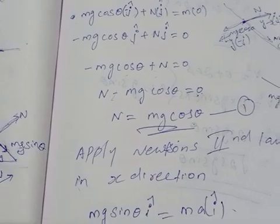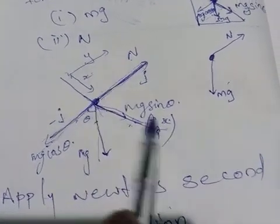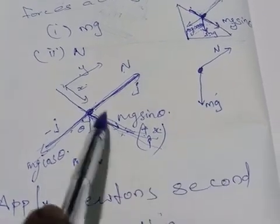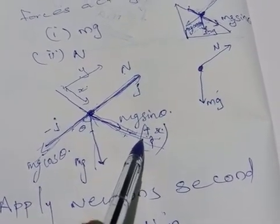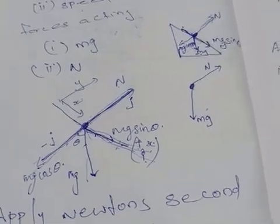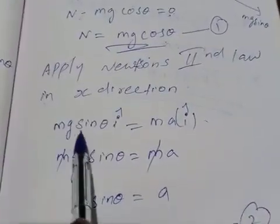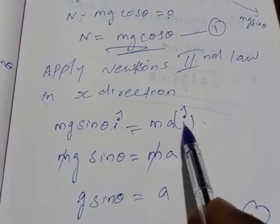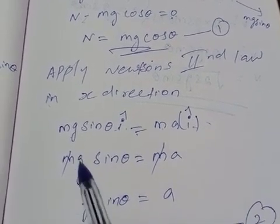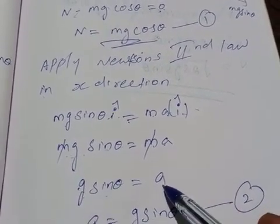Now applying Newton's second law in the x direction. In the x direction, mg sin theta is present, acting in the positive x direction. Acceleration is also in the positive x direction. Using i unit vector: mg sin theta times i unit vector equals mA times i unit vector. Comparing the component: mg sin theta equals mA. Mass m cancels, so g sin theta equals A. Therefore A equals g sin theta.